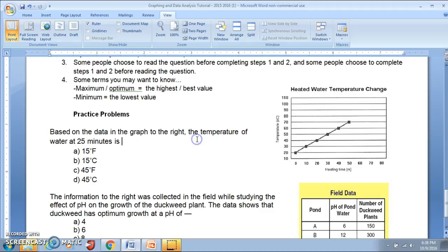So I know I'm looking for a water temperature at a particular time. When I look at my graph, I see my title. It says heated water temperature change, and that doesn't really give me that much information, so I'm going to look at my axis labels. I have heating time on my x-axis and the change in temperature on my y-axis. So I'm looking for the temperature of the water at 25 minutes, so I'm going to go to 25 minutes of heating time, and I'm going to estimate what my value on the y-axis would be, and it looks like it's about 45.